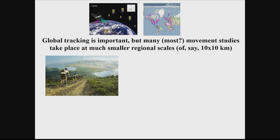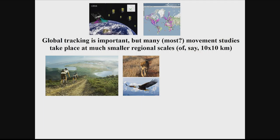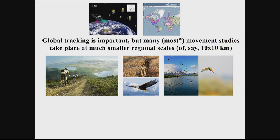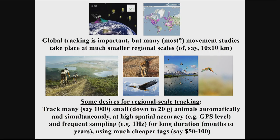At regional scales — large enough to cover the lifetime track of most species — and moving beyond large charismatic species to smaller ones, we actually need many individuals, automatically and simultaneously tracked at GPS accuracy and frequently, such as at one hertz, for long times, and at much lower cost. Currently a GPS tag costs around $1,000–2,000; we want to bring that down to around $50.